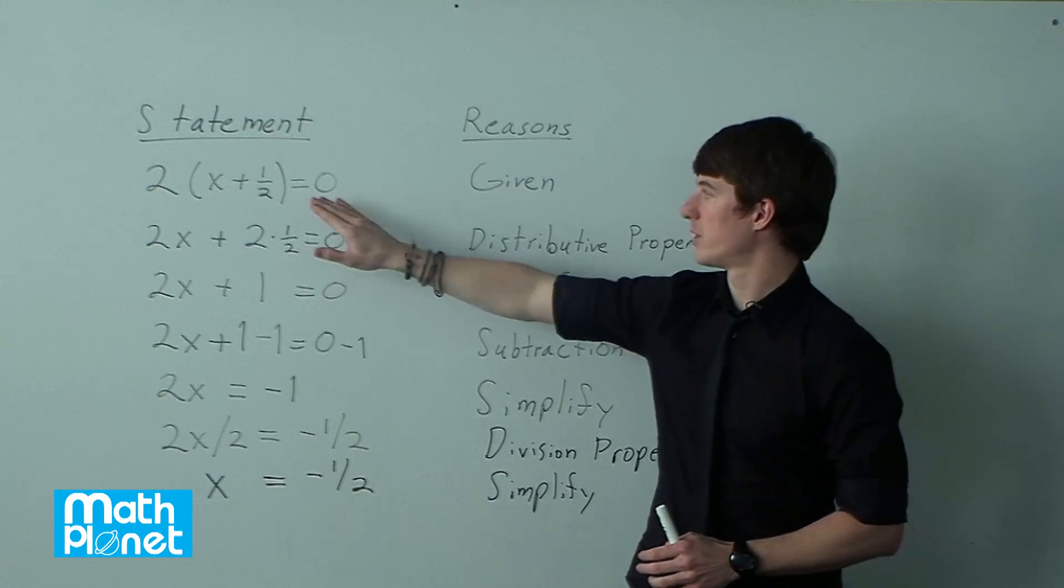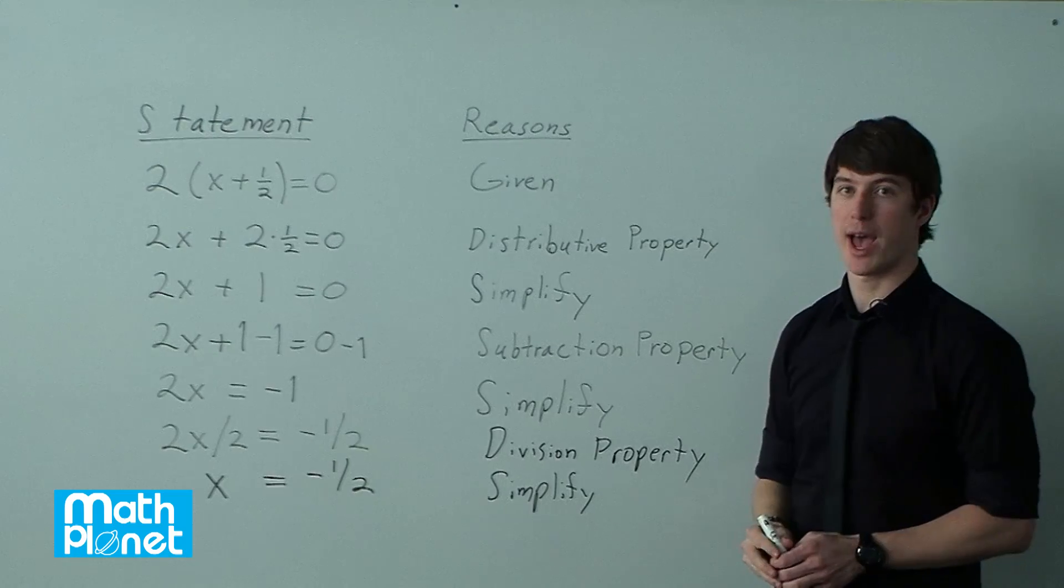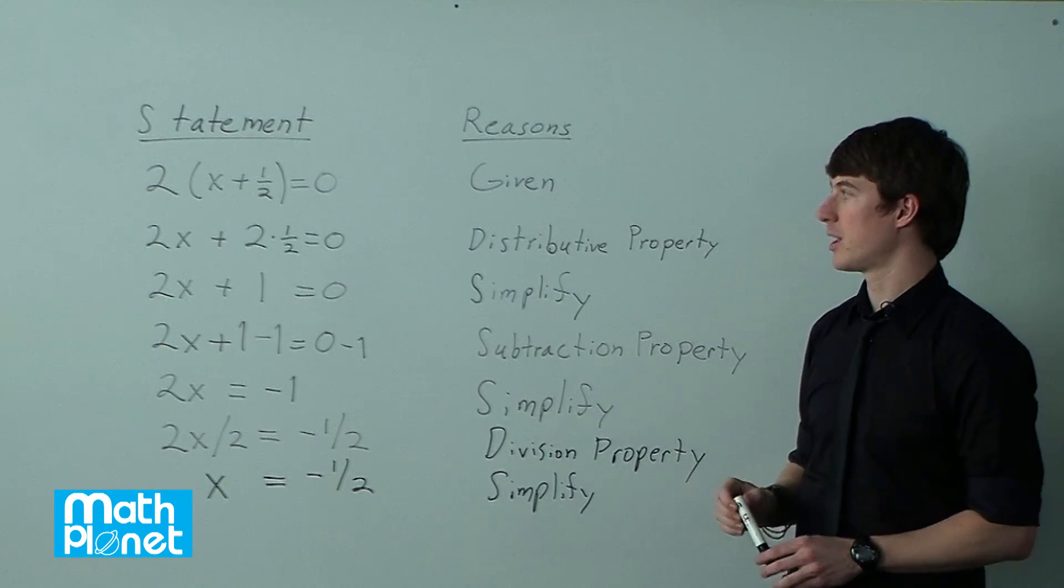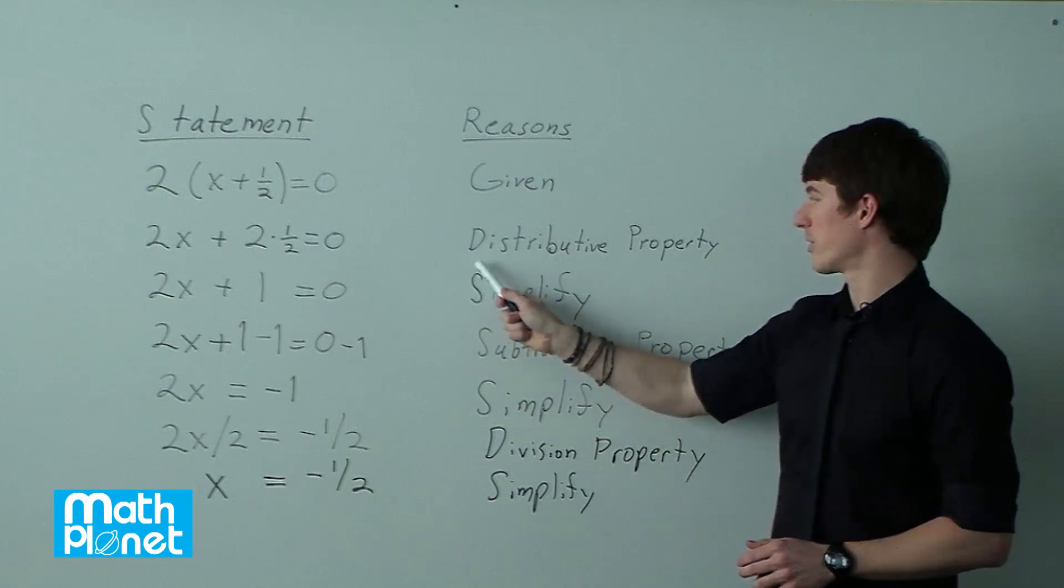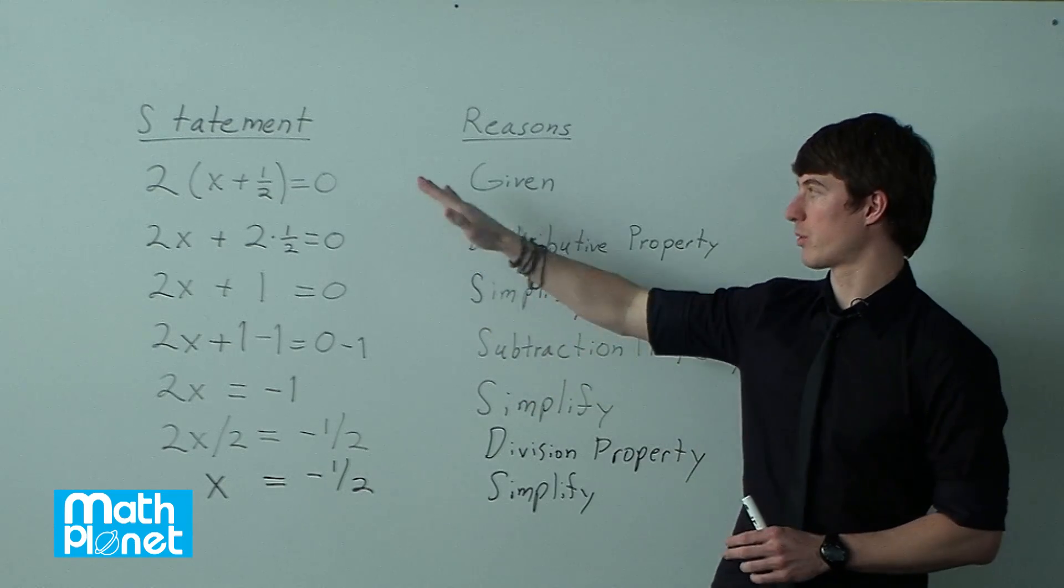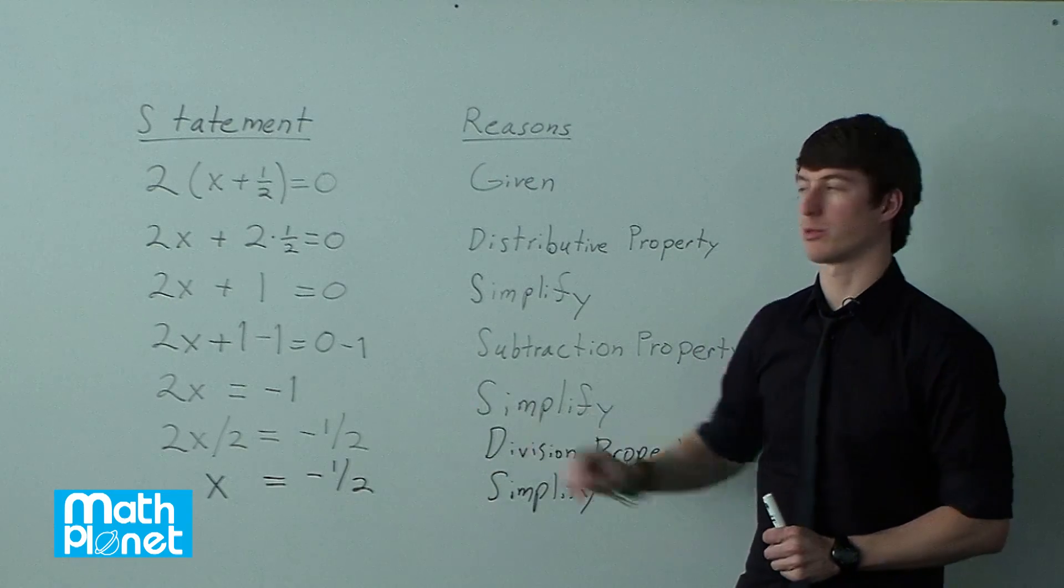So here we have 2 times the quantity x plus 1/2 equals 0 is our given. Then we want to distribute. It's the distributive property. So we're going to just basically simplify this as much as possible to the very end.